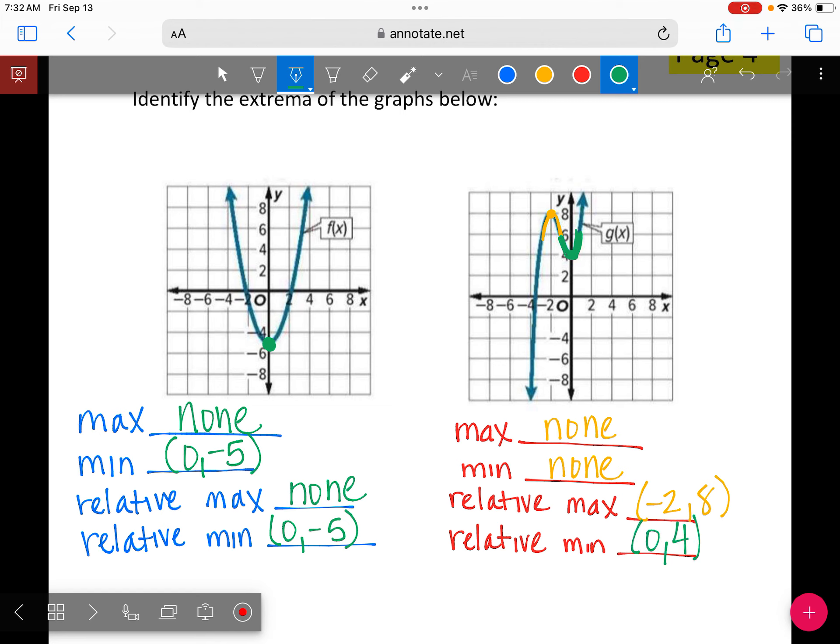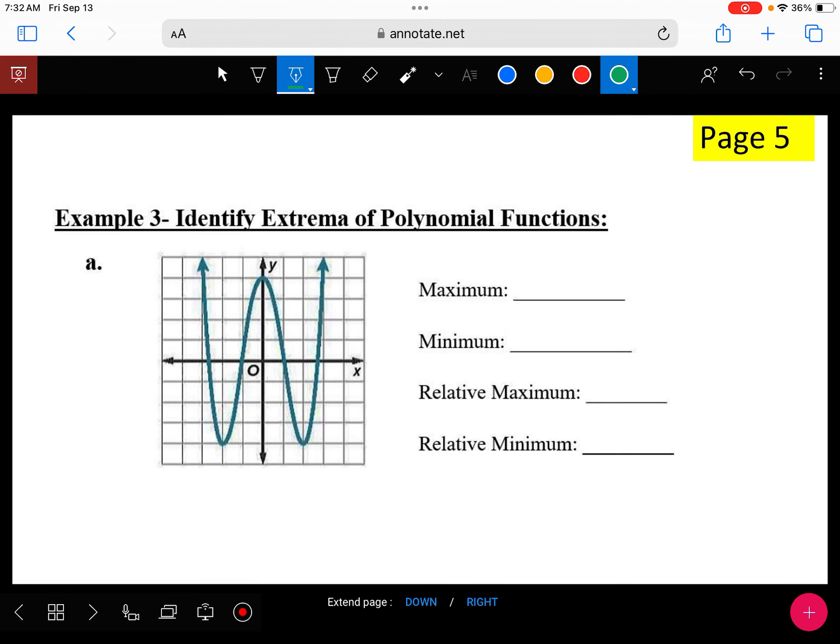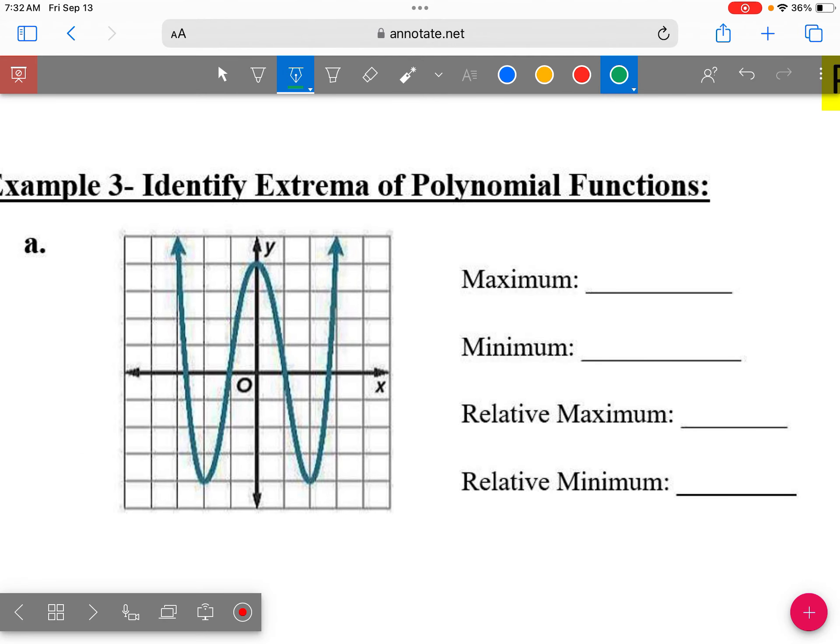All right. Any questions about that? All right. Let's go to the next page and look at a couple more graphs. All right. So we have, do we have a maximum? Do we have arrows pointing up? Anytime you have arrows up. So look back here. Arrows up, no max. Arrows up, no max. So we have arrows up. So this will be none. We don't have that.